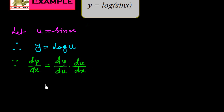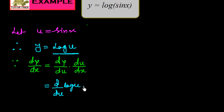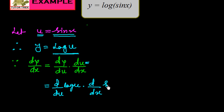Now we write down the values. We put down d over du of y, and since y is log u, we use log u here. Then for the second part, d over dx of u, and instead of u we put sin x, because u is equal to sin x.